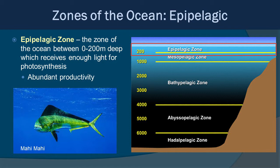The first zone is the epipelagic, essentially the surface zone we're all used to. Most of our activities and most of the animals we know of live in the epipelagic. It's from 0 to 200 meters deep and receives enough light for photosynthesis, so you have abundant productivity and thus abundant life. Here's a picture of a mahi-mahi, which is a very popular game fish around these parts.